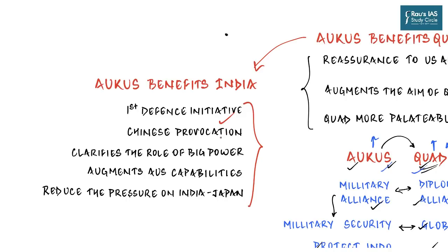As a net result, AUKUS is going to help India. It is the first of its kind military engagement in the Indo-Pacific to counter growing Chinese influence, something India has long awaited. AUKUS can be extremely useful in responding to any military provocation by China. It clarifies the role of big powers like the US and UK, augments Australia's capability as India's strategic partner, and reduces pressure on India and Japan to undertake defense commitments in the Indo-Pacific.